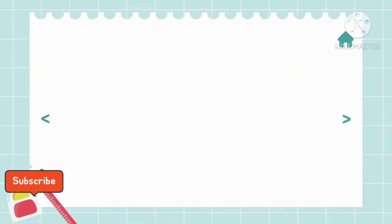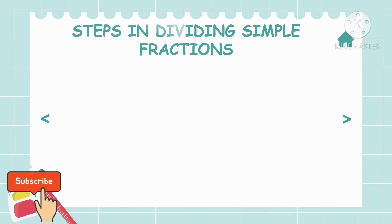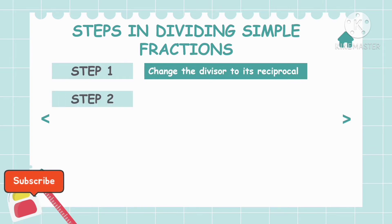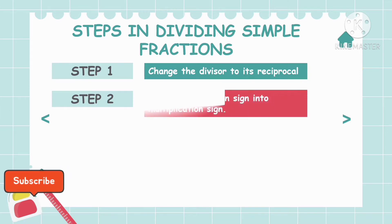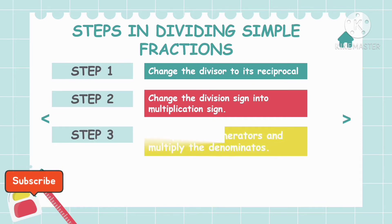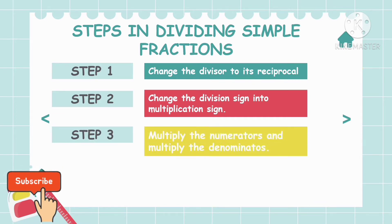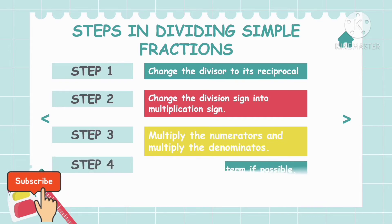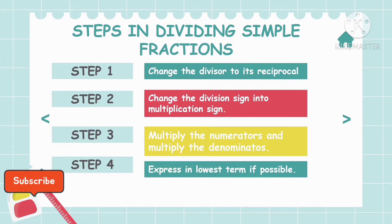Before we proceed to our solution, here are the steps in dividing simple fractions. Step 1, we change the divisor to its reciprocal. Step 2, we change the division sign into a multiplication sign. Step 3, multiply the numerators and multiply the denominators. And Step 4, we're going to express our answer in lowest terms if possible.